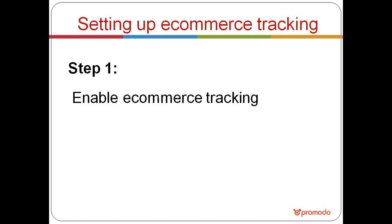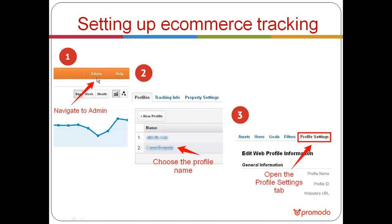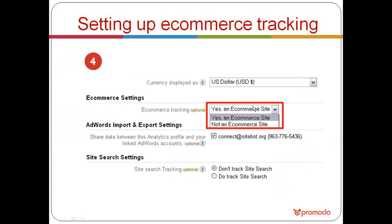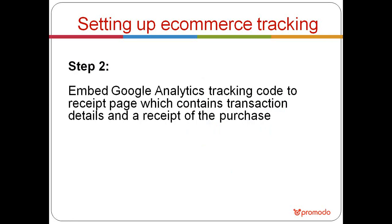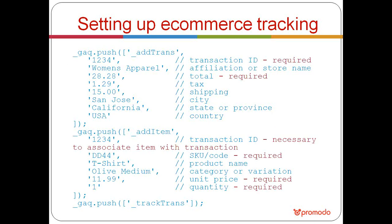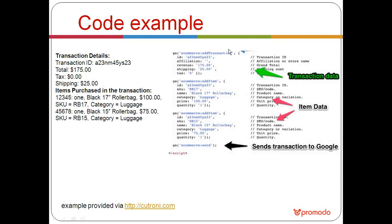Step two is to embed the Google Analytics tracking code on a page that contains transaction details — for example, a receipt page. The code follows a pattern with required and optional fields. With real transaction data, the code will look something like the example shown. After setting up e-commerce tracking, navigate to the conversions section and select e-commerce to see traffic sources and the revenue they generated. You can also see quantity sold, unique purchases, product revenue, and average price — all associated with traffic sources.